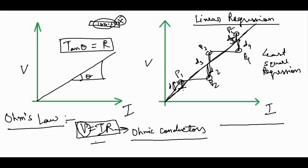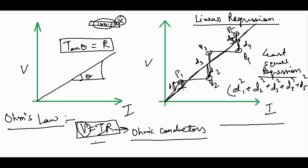In least square regression, the squares of these distances must be as low as possible. The best-fit line must be drawn such that the sum of the squares of these distances is minimized.